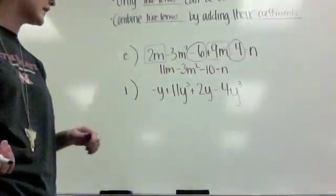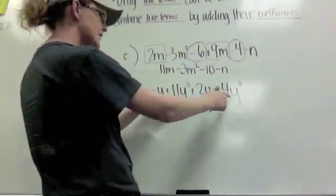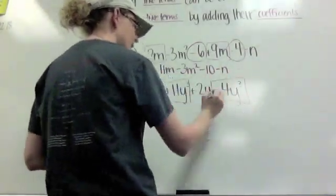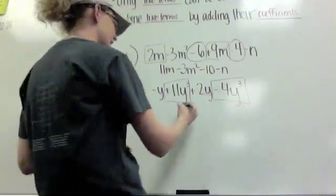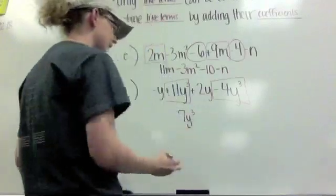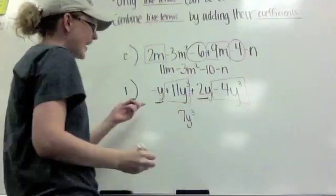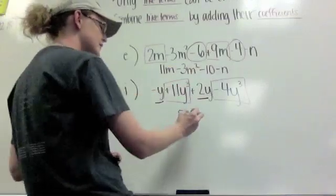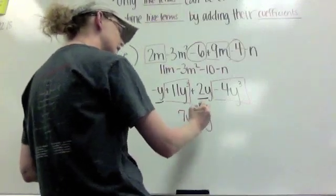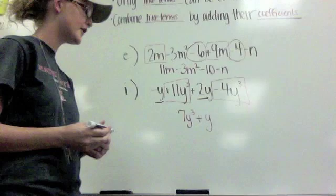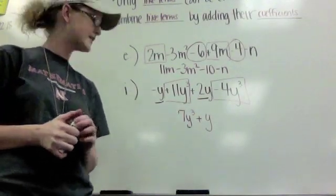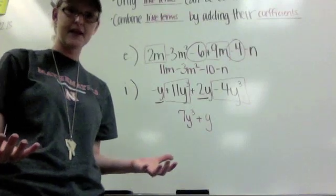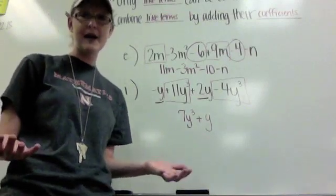Let's try the same thing here on i. If I look through here, I see y to the third and y to the third. I can put 11y to the third with minus 4y to the third. That gives me 7y to the third. I can also put negative y with positive 2y. Remember, this is negative 1 plus 2, which would be positive 1. So you can either put the 1 there, or you don't have to. The answer to that one would be 7y to the third plus y. Okay? Please complete all of the other examples on the guided notes before you get back to class tomorrow.